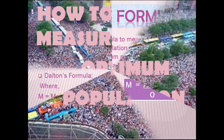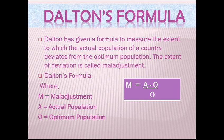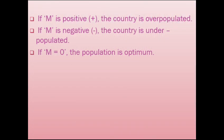Dalton has given a formula to measure the extent to which the actual population of a country deviates from the optimum population. The extent of deviation is known as maladjustment. The formula is: maladjustment (M) equals A minus O divided by O, where O denotes the optimum population and A is the actual population. If M is positive, the country is overpopulated. If M is negative, the country is underpopulated. And if M equals zero, the population is optimum for the country.